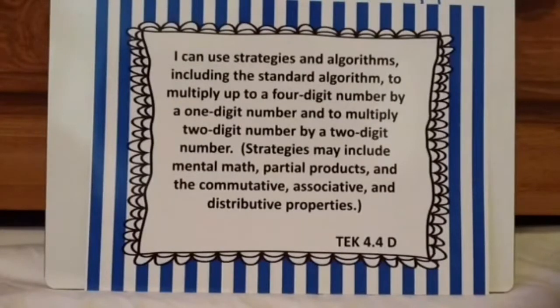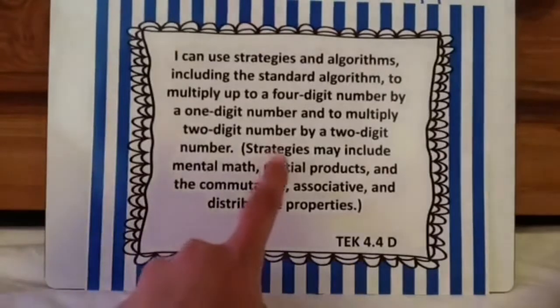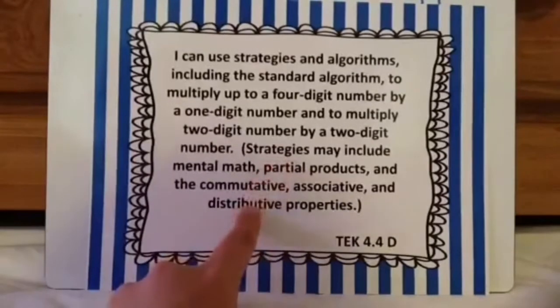Hi scholars, let's look at TEK 4.4D. I can use strategies and algorithms, including the standard algorithm, to multiply up to a four-digit number by a one-digit number and to multiply two-digit number by a two-digit number. Strategies may include mental math, partial products, and the commutative, associative, and distributive property. For this video, I am just going to focus on partial products and distributive property only.